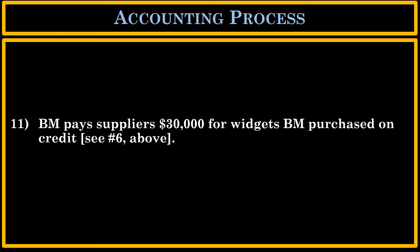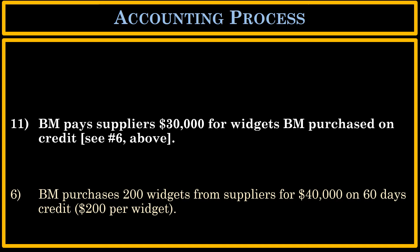Let's move on to the next transaction — transaction number 11. BM pays suppliers $30,000 for widgets BM purchased on credit, see number 6 above. In transaction number 6, BM purchased some widgets on 60 days credit from various suppliers. Now, during the year, BM has paid $30,000 of this $40,000.